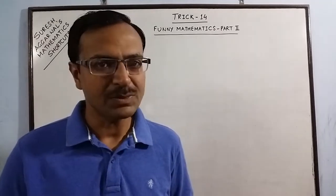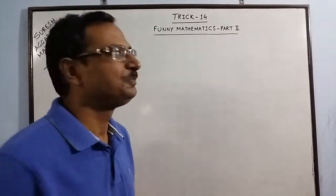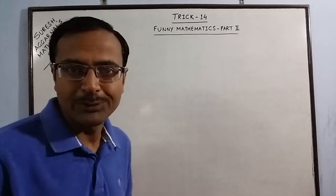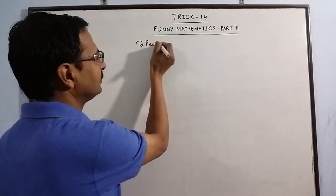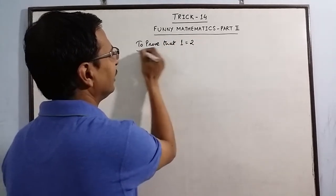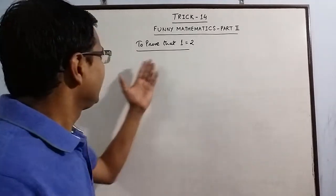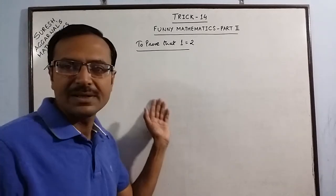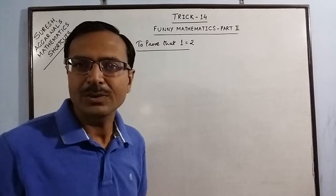In trick 14, you have to tell me what is wrong in the steps which I have done. The first part of my trick is to prove that one is equal to two — funny, isn't it? One cannot be equal to two, obviously.